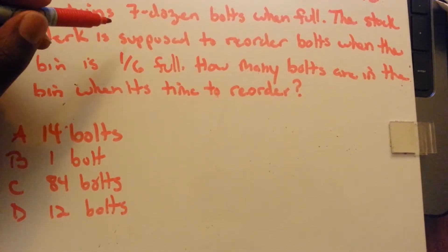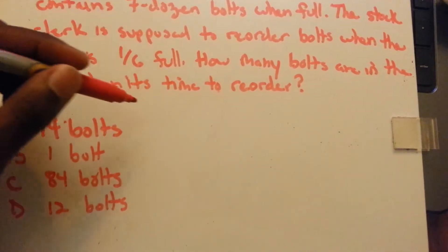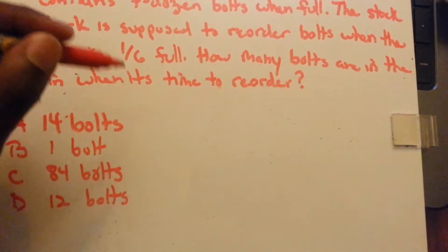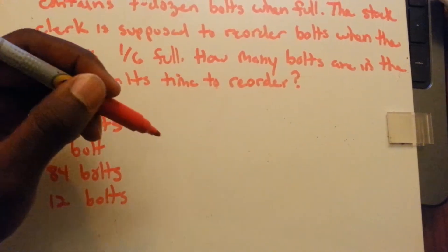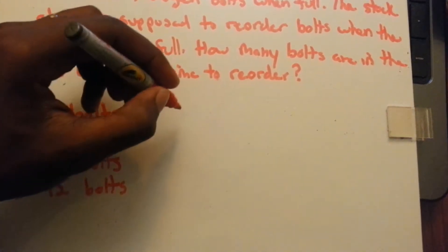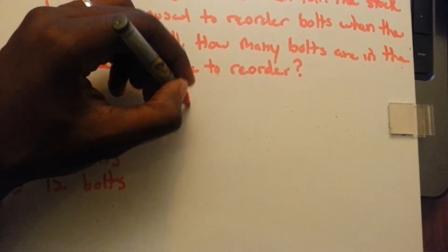So, the first thing to find out is how many bolts are in there when it's full. Seven dozen is... a dozen is twelve, in case you didn't know.